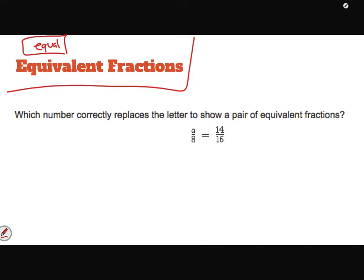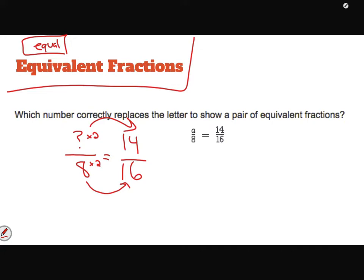Here the question asks which number correctly replaces the letter to show a pair — it says a over 8 equals 14 sixteenths. All you have to do is look at the relationship between the two fractions. To go from 8 to 16, I multiply by 2. So to make an equivalent fraction, I do the same to the numerator: what times 2 gets me 14? That would be 7. So a equals 7, because seven-eighths and fourteen-sixteenths, although written differently, are equivalent fractions covering the same amount.